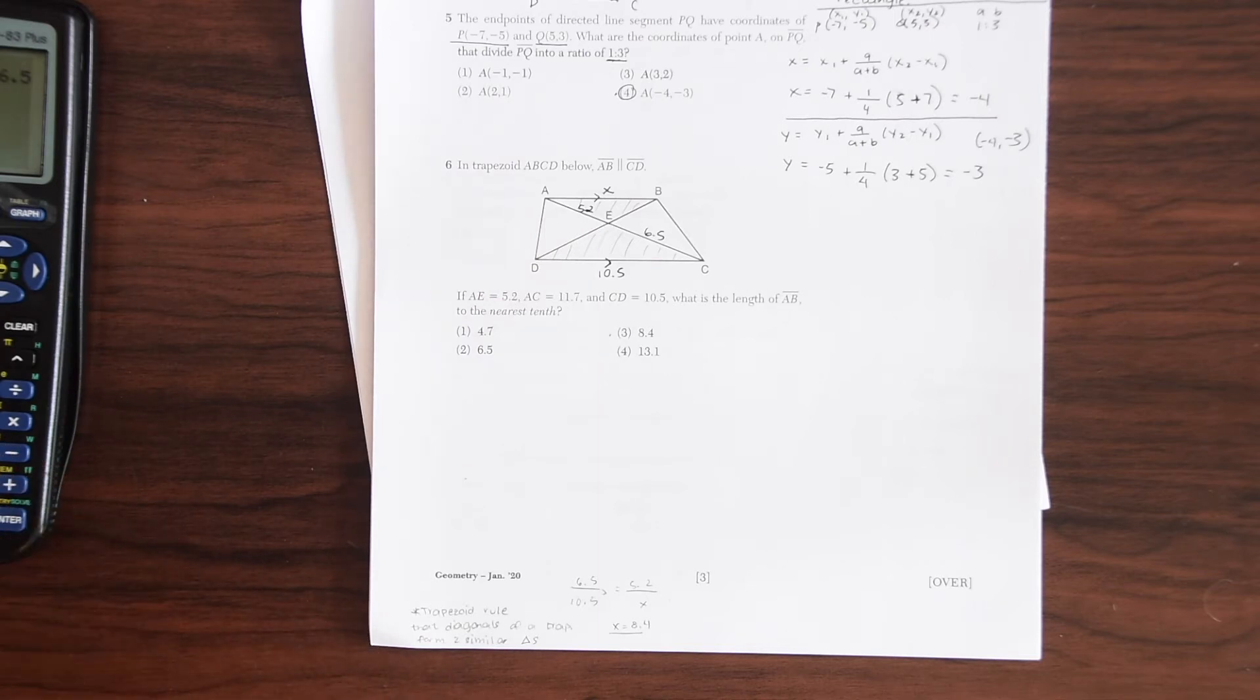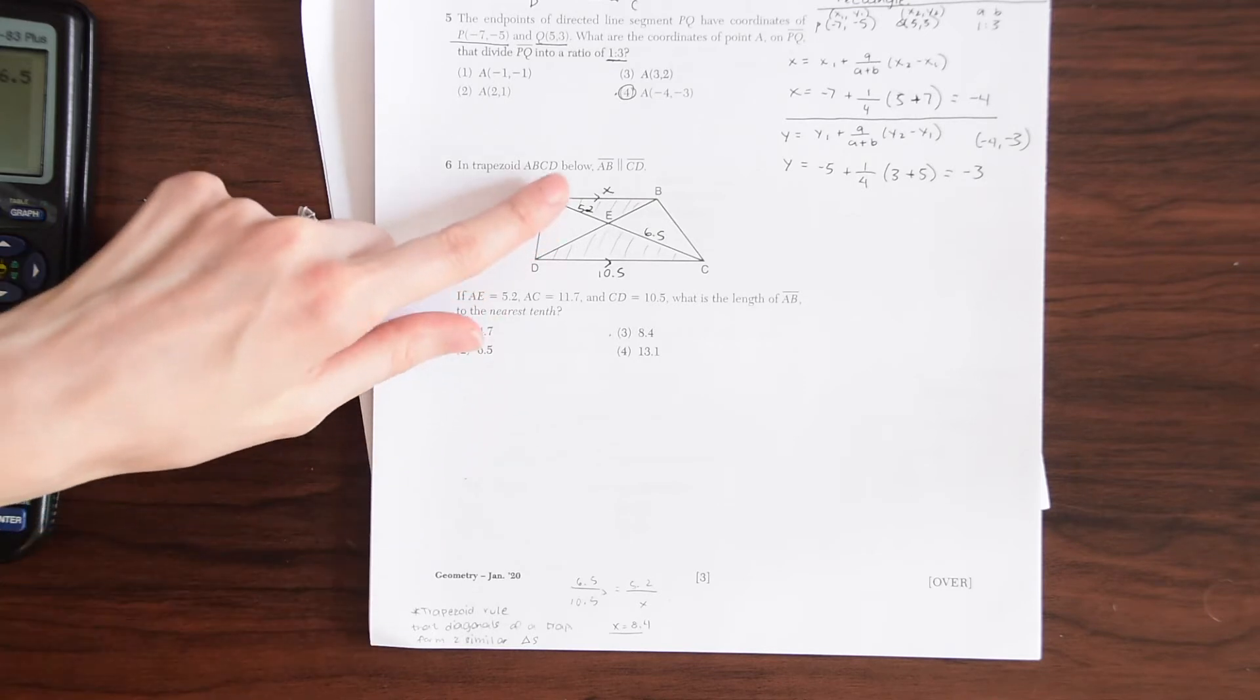A rule about diagonals within the trapezoid is that they form similar triangles. So whenever we have similar triangles, we know that all the side lengths are in proportion to one another of the triangle. So knowing that we can set up a proportion and solve for X here.